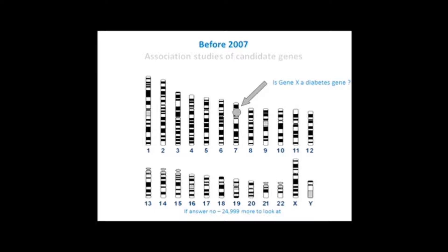Before 2007, the method of using this association analysis was to think of a gene that might be important in your disease — say for diabetes, you might consider a gene involved in making cells in the pancreas. You'd look at the SNPs, the base changes in that gene, and ask: is it associated with diabetes? This seemed like a good idea, but the problem was that there were lots of reports of significant associations and most of them were not replicated. And of course, if you didn't find something in your first gene, you had another 24,999 to look at.